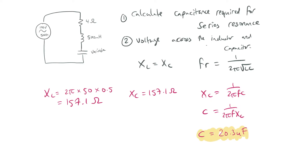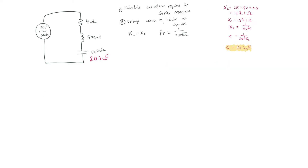Now the next step is to calculate the voltages across these components. We need to get the current first. I = V/R = 100 volts divided by 4 ohms, which gives us 25 amps.